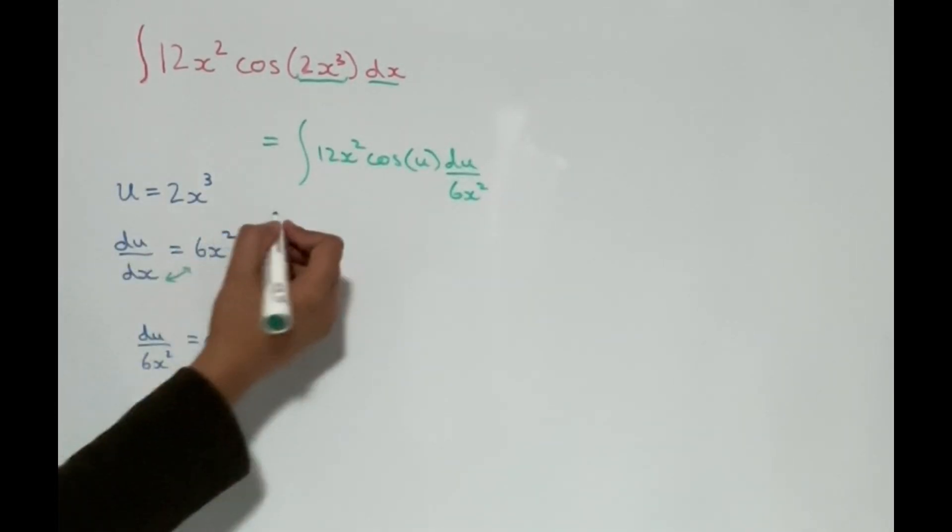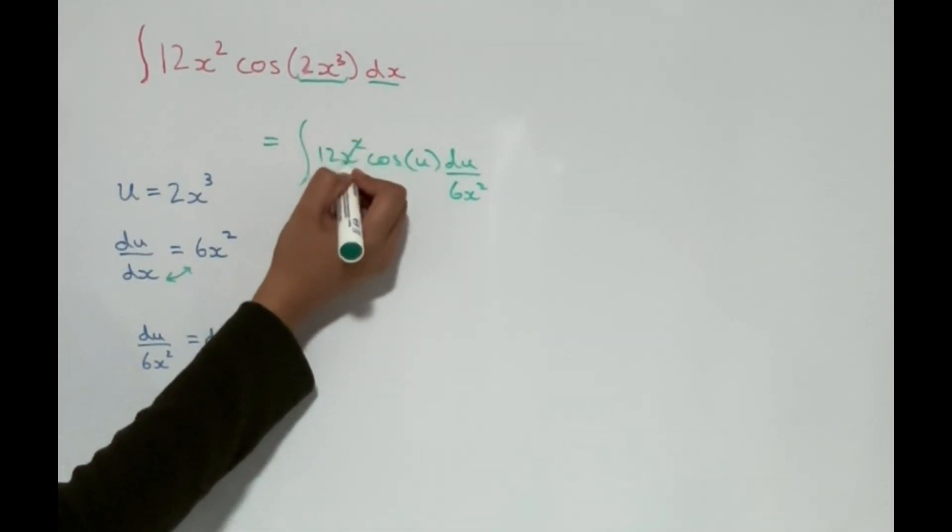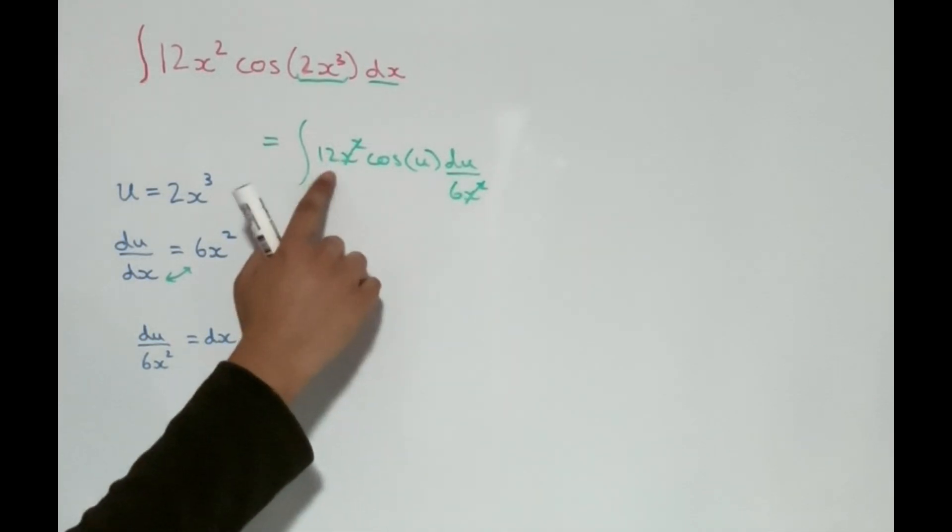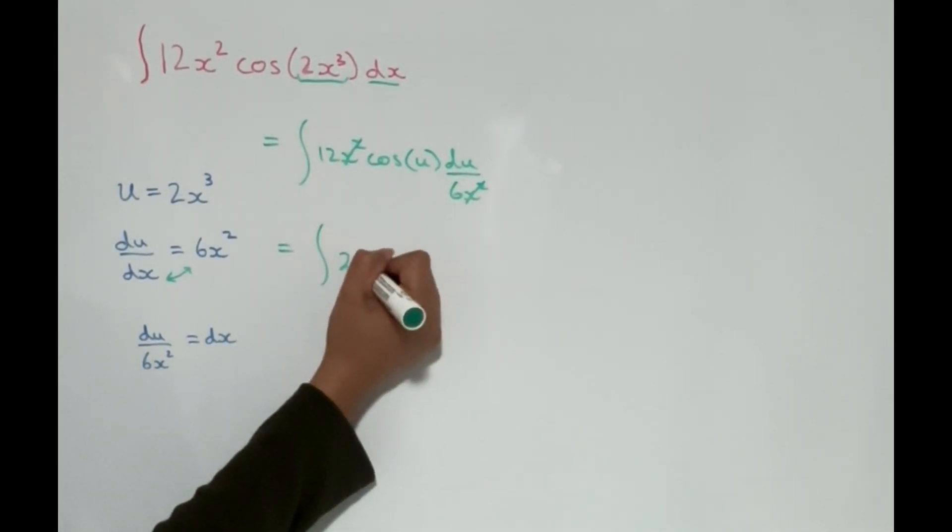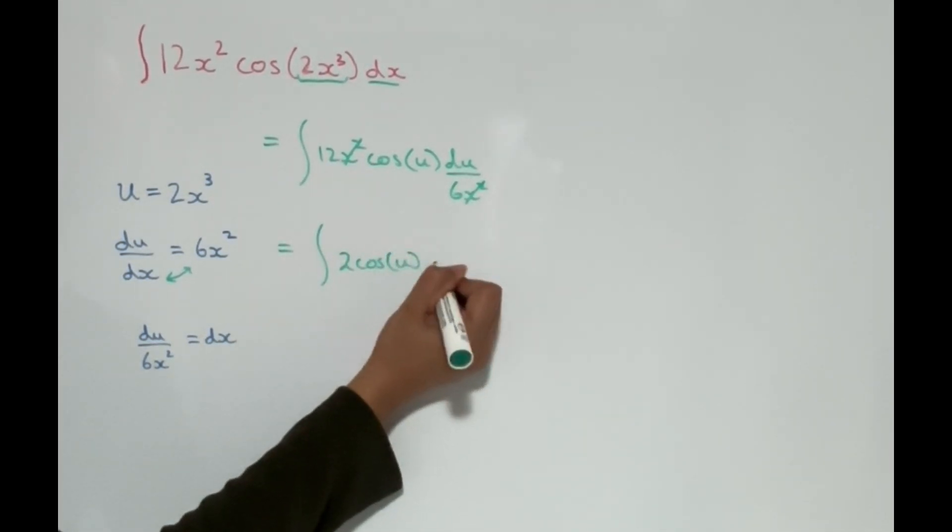Now this is good substitution because we can see that this x squared and this x squared cancels, and 12 divided by 6 is 2. So our integral becomes 2 cos u du.